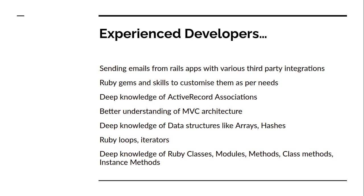You need deep knowledge of data structures like arrays and hashes. Sometimes you have to deal with JSON objects and convert them into Ruby hashes. For example, if JSON data fails to parse, you can use the eval method to evaluate a JSON string into a Ruby hash. You must also know Ruby loops and iterators, and have deep knowledge of Ruby classes, modules, mixins, methods, class methods, and instance methods.